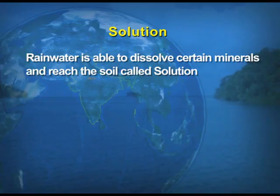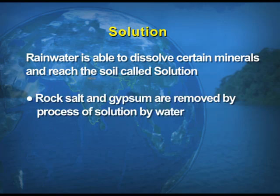The last chemical process is solution. When the soluble minerals get dissolved in water, that is known as solution. Rain water is able to dissolve certain minerals and they reach the soil — this is called solution. For example, rock salt and gypsum are minerals which get easily dissolved in water.